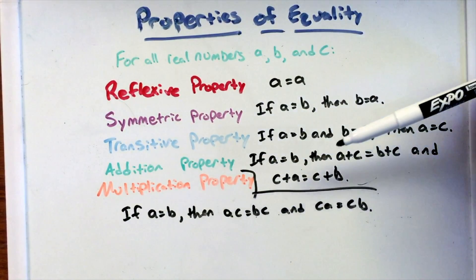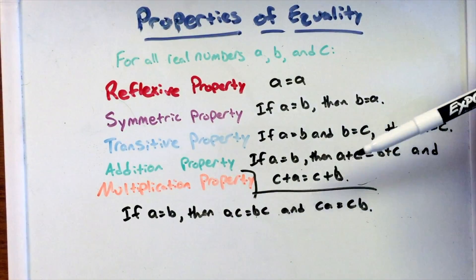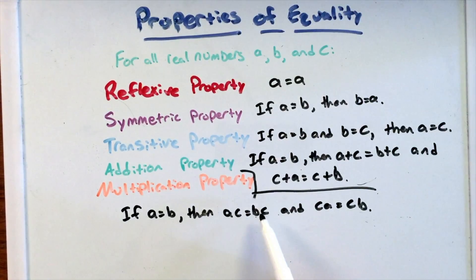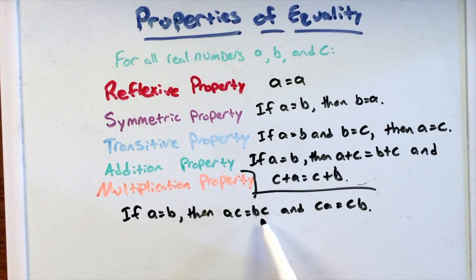So again, we have: if A equals B, then we can multiply C to both sides of the equation and still keep it equal, keep that property of equality, that equal sign there.